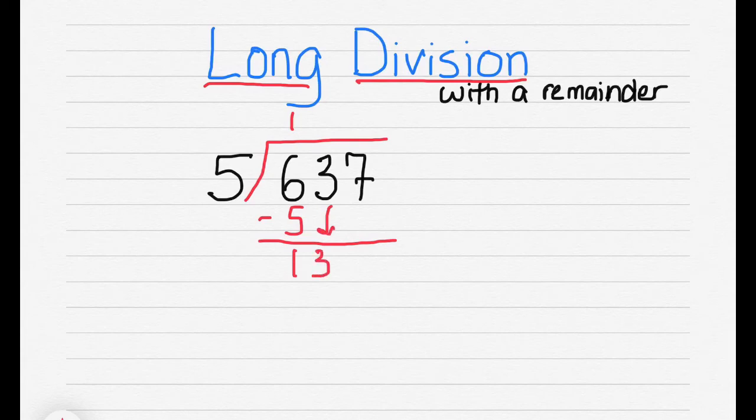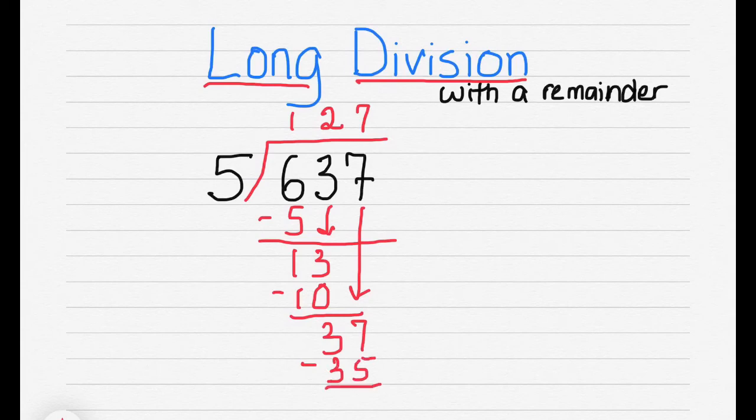5 goes into 13 two times. 5 times 2 is 10. We subtract that from our 13. We get 3. We bring down our 7. 5 goes into 37, 7 times. 5 times 7 is 35.